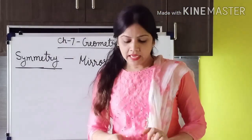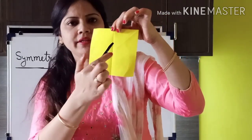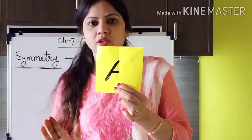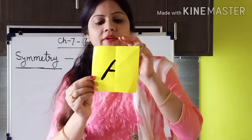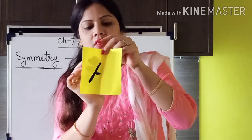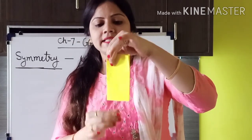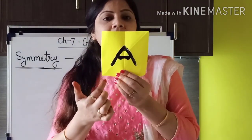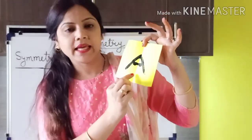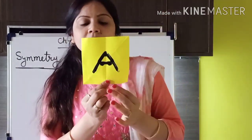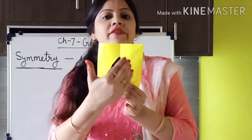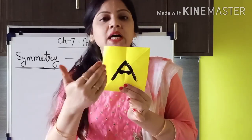As you can see, on a paper I have written something — a half letter. How can we see what I have written? We will just fold this paper. Then what we see is that the color has also spread on the other side. So what letter did it become? A — the alphabet A is written here. Similarly, the line from where I folded the paper is the line of symmetry. Both halves are the same.